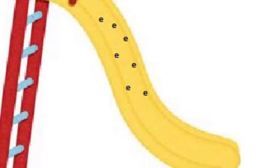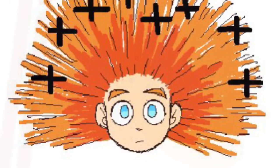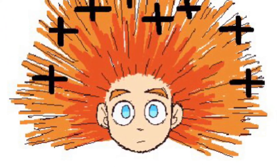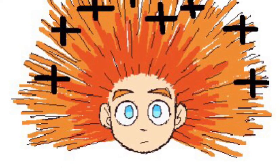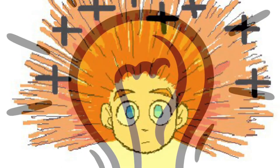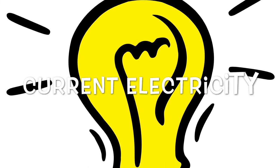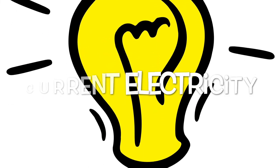Now when you lose electrons, it means that all of those hairs now have a positive charge. And when they all have a positive charge, they want to push away from each other, so they fly up. So that's static electricity.